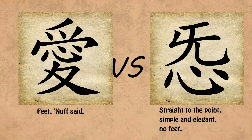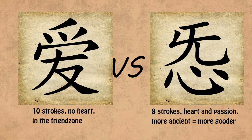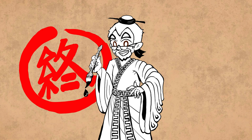In conclusion, the traditional character for Love is a hot mess directed by Tarantino, and the 1947 Simplification Committee dropped the ball and brought dishonor upon their families by being Chinese yet failing at basic math when they didn't revive the original character.